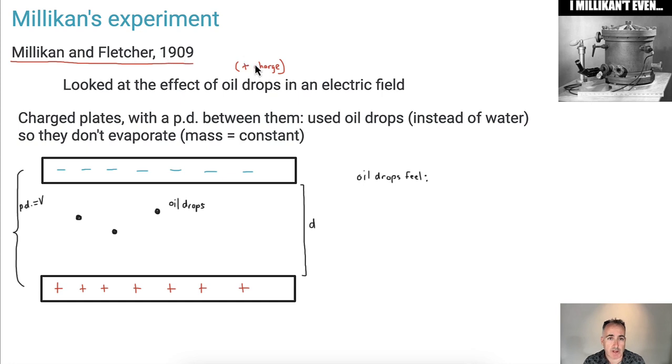They're trying to look at what would happen to charged particles in an electric field. They used oil drops because they didn't want to use water, for example, because water could evaporate and then the mass isn't constant. And they were charging these oil drops, so for example, let's say you charge them positively.